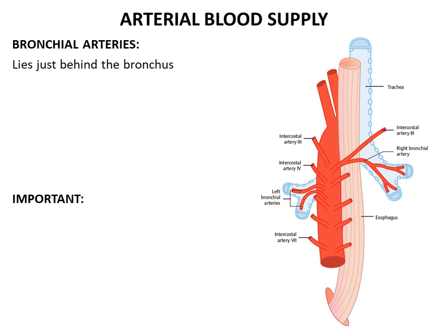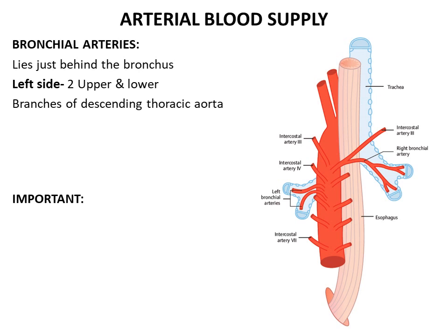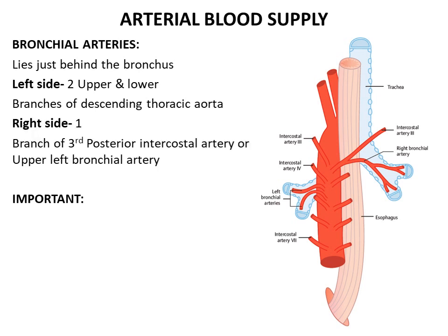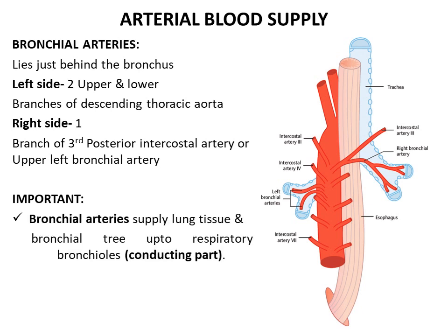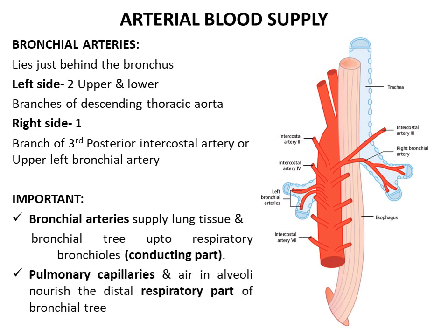Arterial blood supply is through the bronchial arteries, which lie just behind the bronchus. On the left side there are two bronchial arteries — upper and lower — both branches of the descending thoracic aorta. On the right side there is one bronchial artery, usually a branch of the third posterior intercostal artery, though it may sometimes arise from the upper left bronchial artery. These bronchial arteries supply the lung tissue and the conducting part of the bronchial tree up to the respiratory bronchioles. The distal respiratory part is mainly supplied by the pulmonary capillaries and the air present in the alveoli.